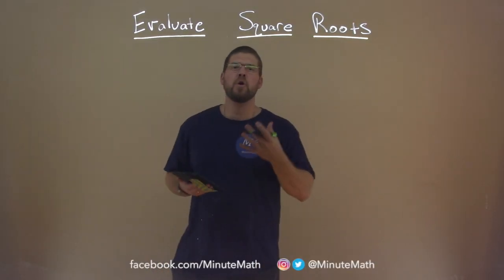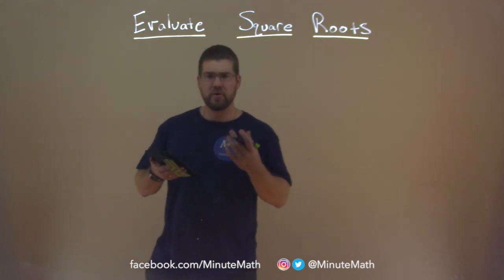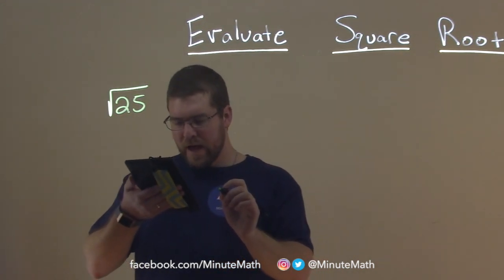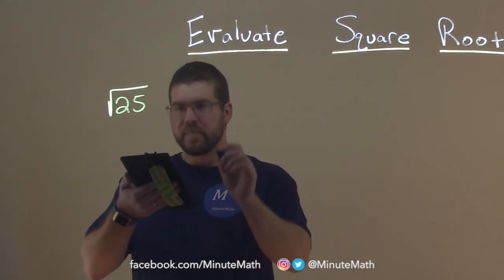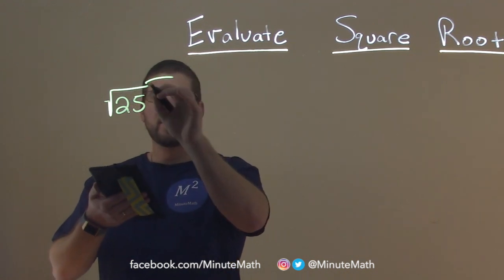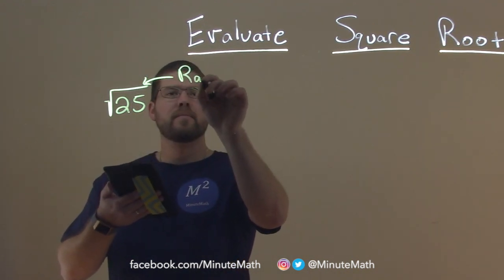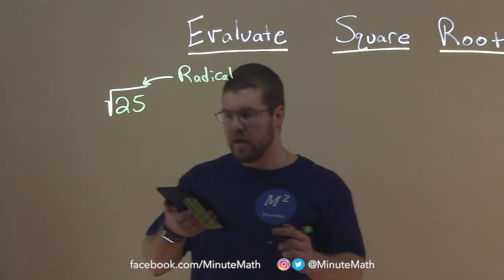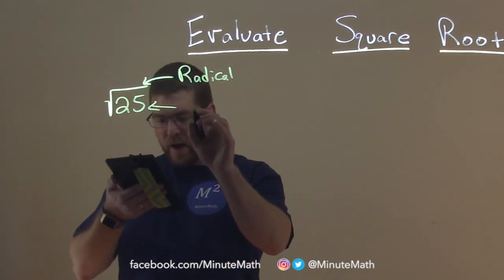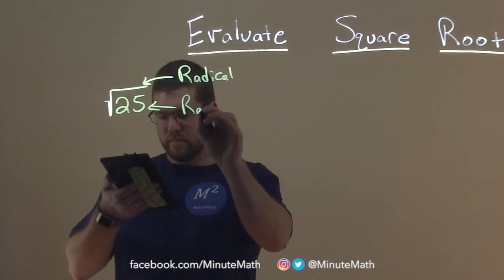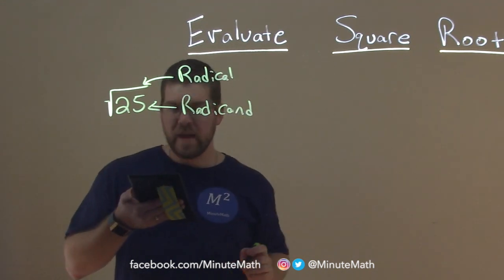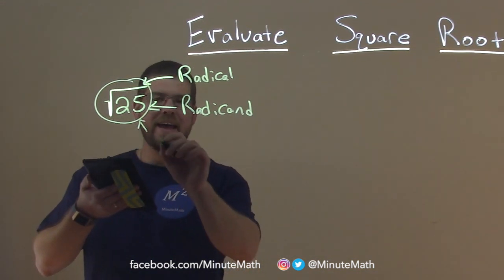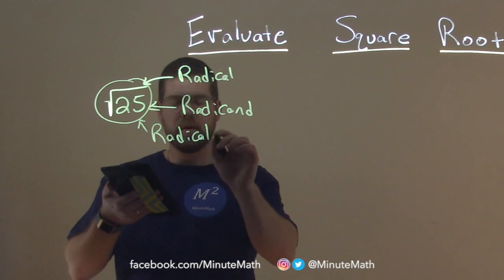So a few things we want to know about square roots before we start, a few terms. So if I had the square root of 25, we have a few things here. This symbol right here, we call our radical. The radical, that square root is called the radical. The number that's on the inside is what we call the radicand. And the whole combination of the two, we'll call that a radical expression.